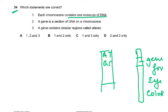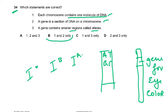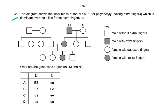Statements one and two are correct. Why is statement three wrong? It says a gene contains smaller regions called alleles — that's incorrect. An allele is the alternative form of a gene. For blood group, you have three alleles: I⁰, Iᴮ, and Iᴬ — three different alternative forms of a gene. So the answer is B: one and two only.